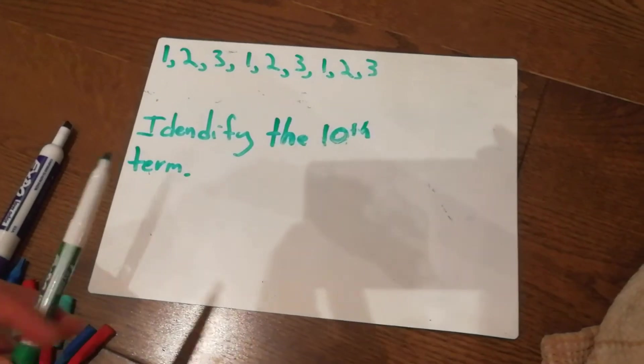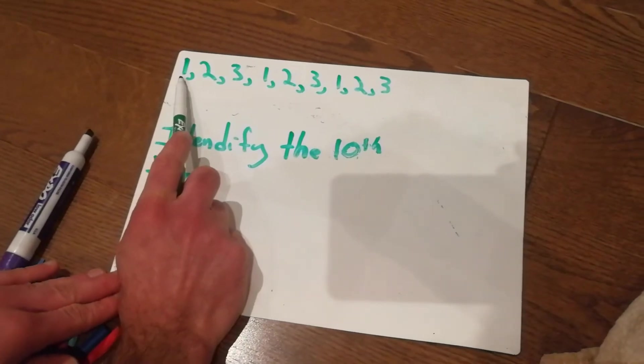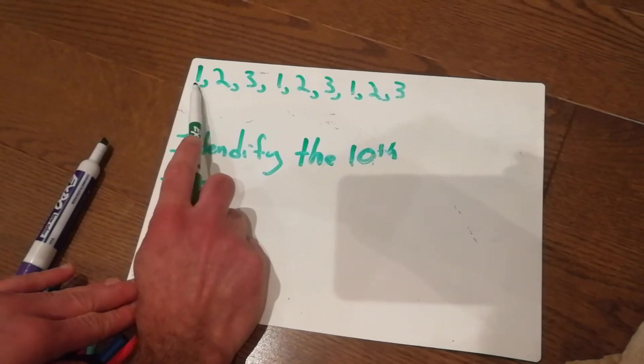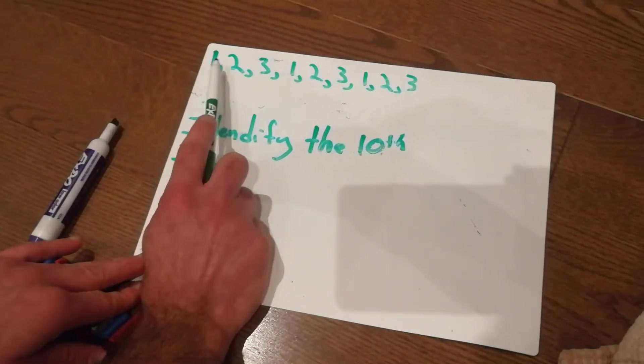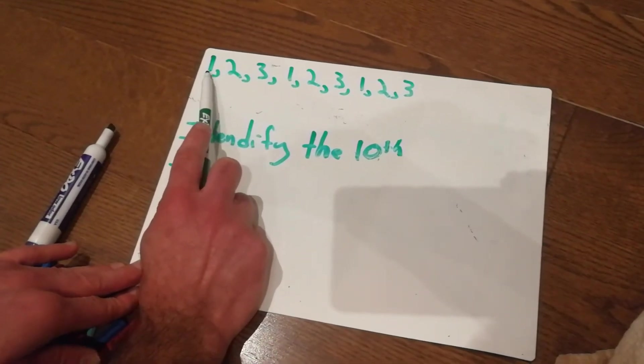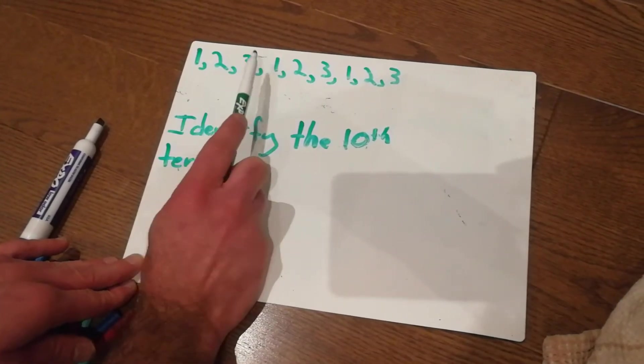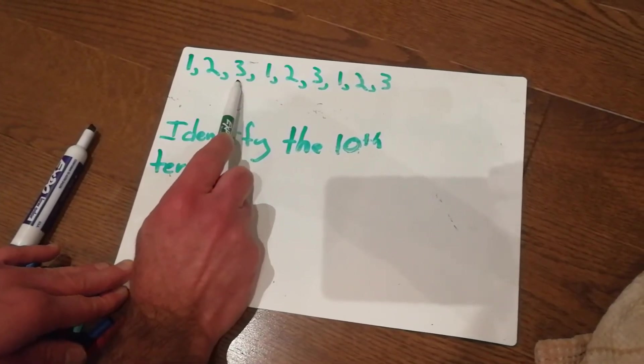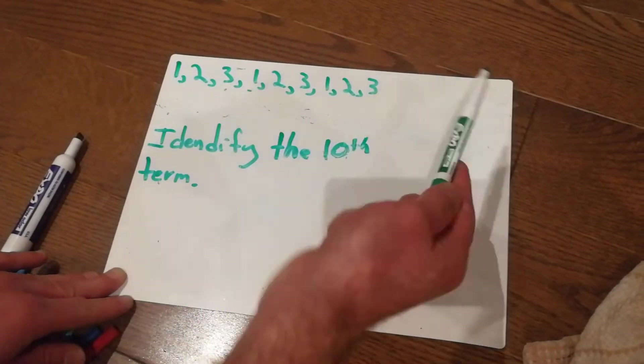Before we really dive into it, a couple things you need to know are what the word term means. So in repeating patterns, or in patterns, we mean the parts of the pattern. So in this pattern here, 1 would be term 1, 2 would be term 2, 3 would be term 3, 1 here would be term 4, and so on and so forth.